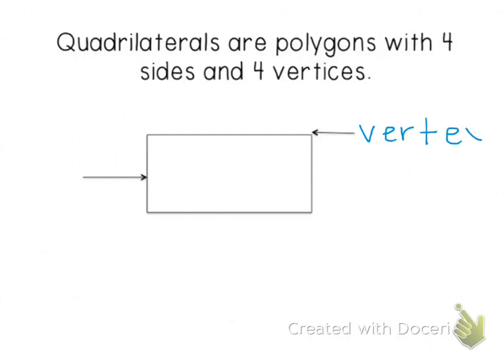You can also think of vertices as the corners, and the sides are the edges of the figure. A quadrilateral has four sides and four vertices, which also means it has four angles.